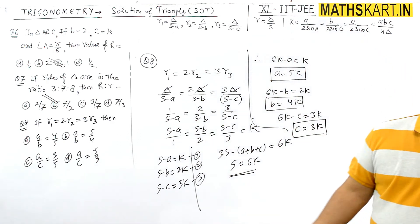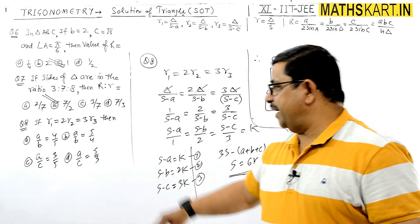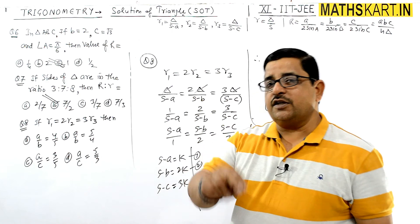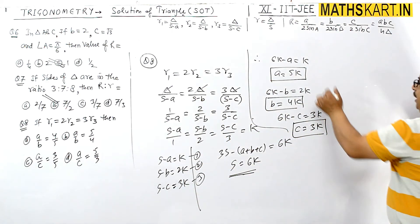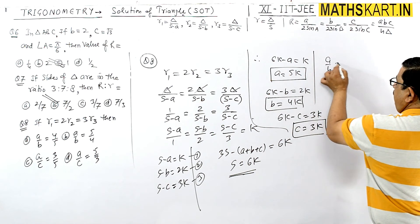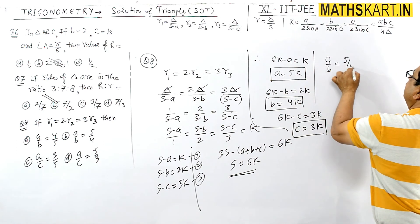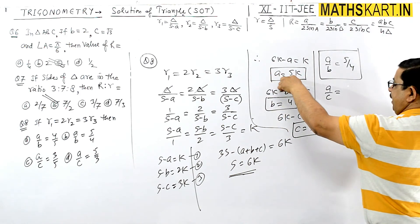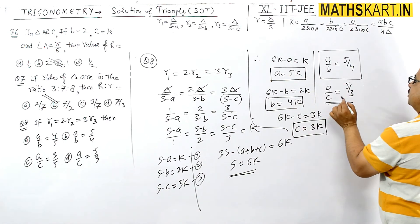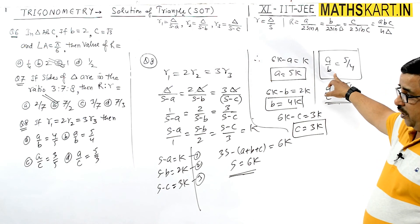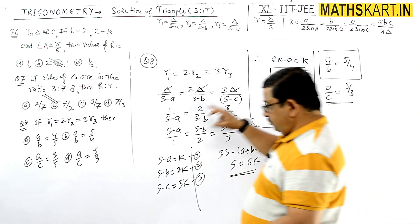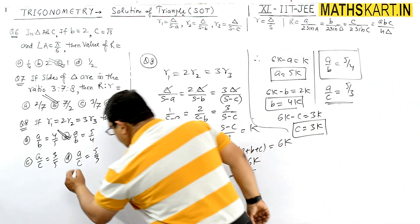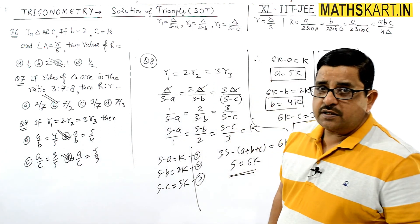यह multi-correct option type question है। a/b = 5k/4k = 5/4, option B correct। a/c = 5k/3k = 5/3, option D correct। So both B and D options are correct in question number 8।